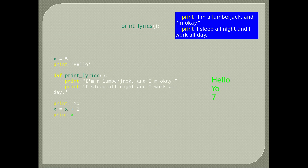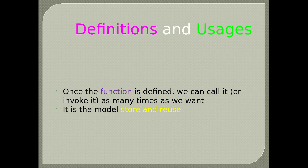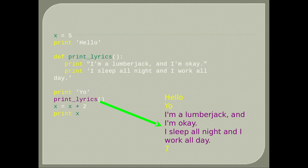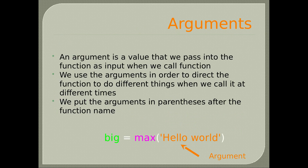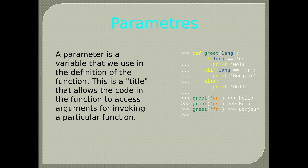So we can print other lines before calling it. When you call it by typing its name, it will also execute its commands. Once the function is defined, we can call it as many times as we want — this is the store and reuse pattern. An argument is a value we pass into the function as input when we call it. We use arguments to direct the function to do different things at different times. A parameter is a variable used in the definition of the function.